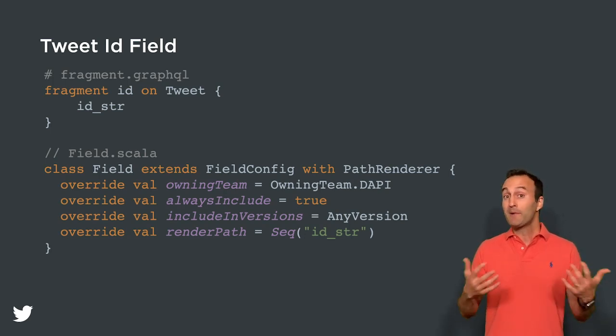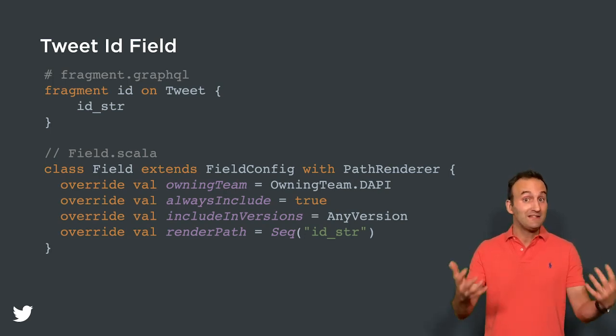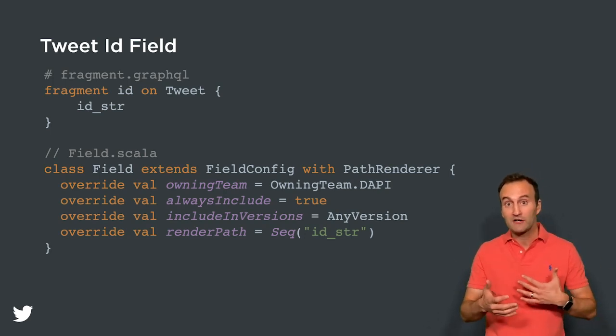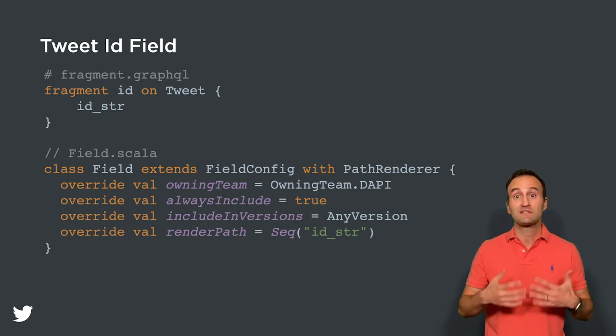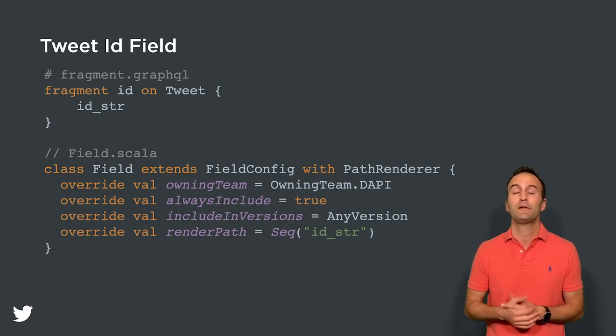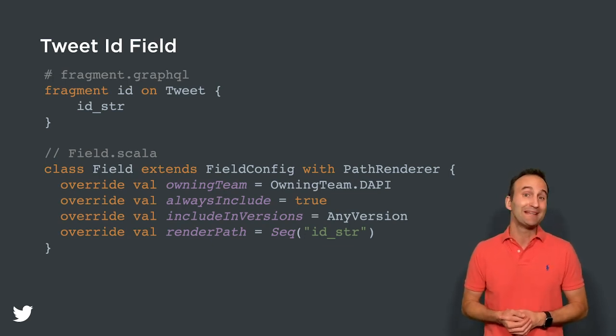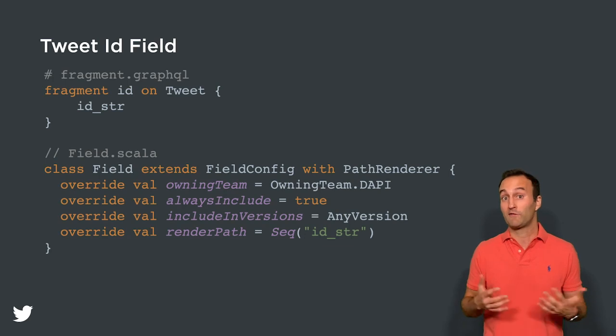When imperative code is needed for rendering or error handling, it will exist in this Scala file. But the platform has a goal to limit the need for imperative code wherever possible.